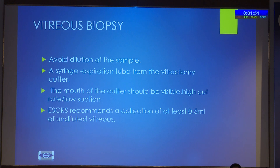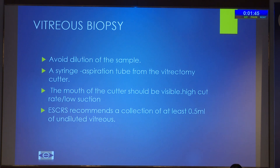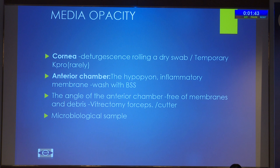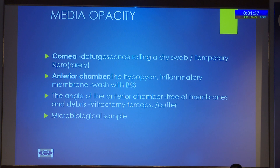Biopsy is very important, and to avoid dilution before switching on the infusion, connect a syringe to the aspiration tube. The cutter should be visible in our view; we can use high cut rate and low suction, and at least 0.5 ml of sample must be taken. If there are corneal infiltrates or ulcer, we can use appropriate procedures. Anterior chamber hypopyon or inflammatory membrane should be cleared, and the sample can be sent for biopsy as well.